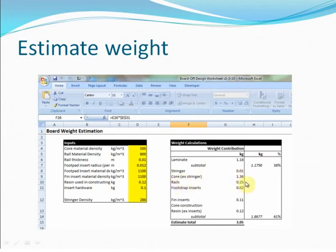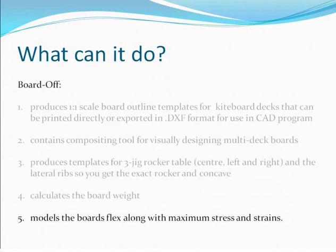There's a flex model in Board Off which takes your actual design — so outline — and allows you to put in the parameters for the core profile. It shows you how the board will flex under certain test conditions that you can also enter in Board Off. Along with the flex profile, it can calculate the maximum stresses and strains in the top and bottom skins, so you can get an idea whether or not you're reaching danger territory with the type of laminate that you're using.